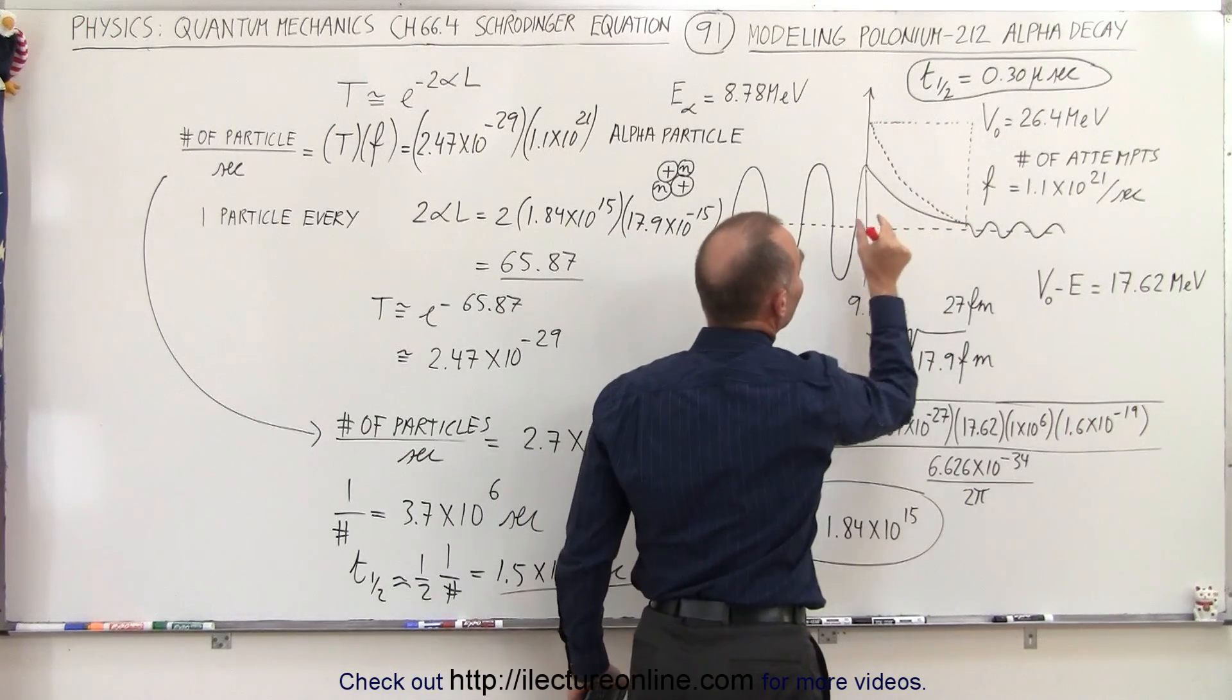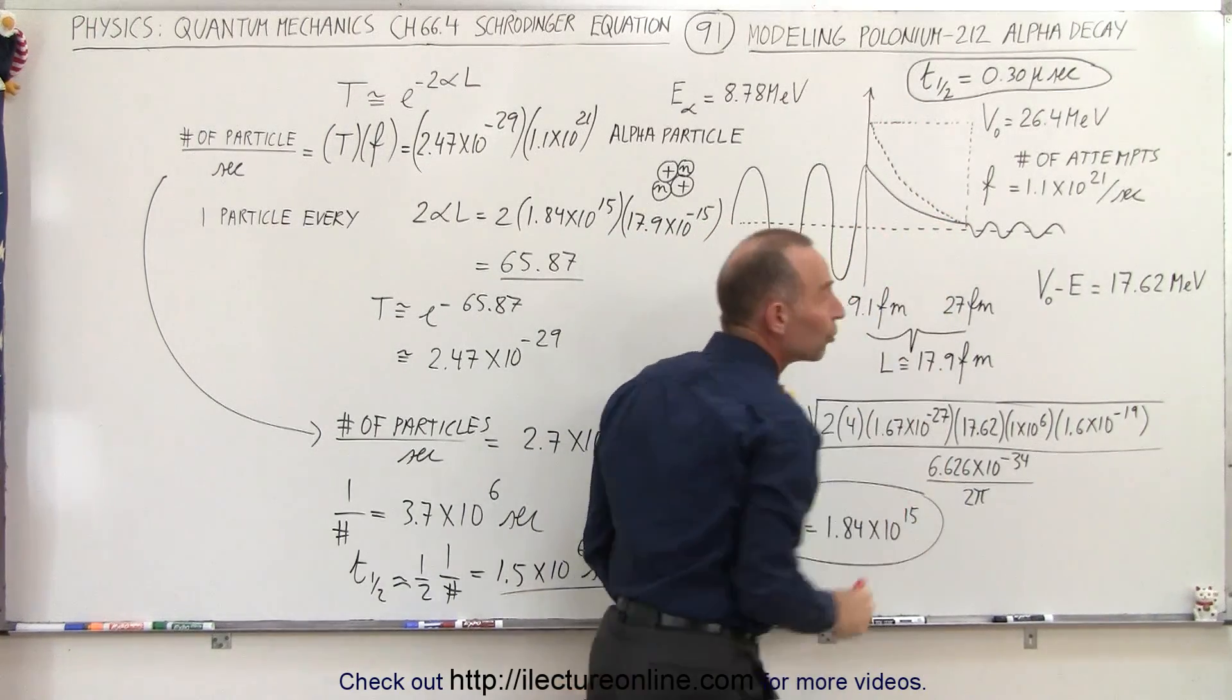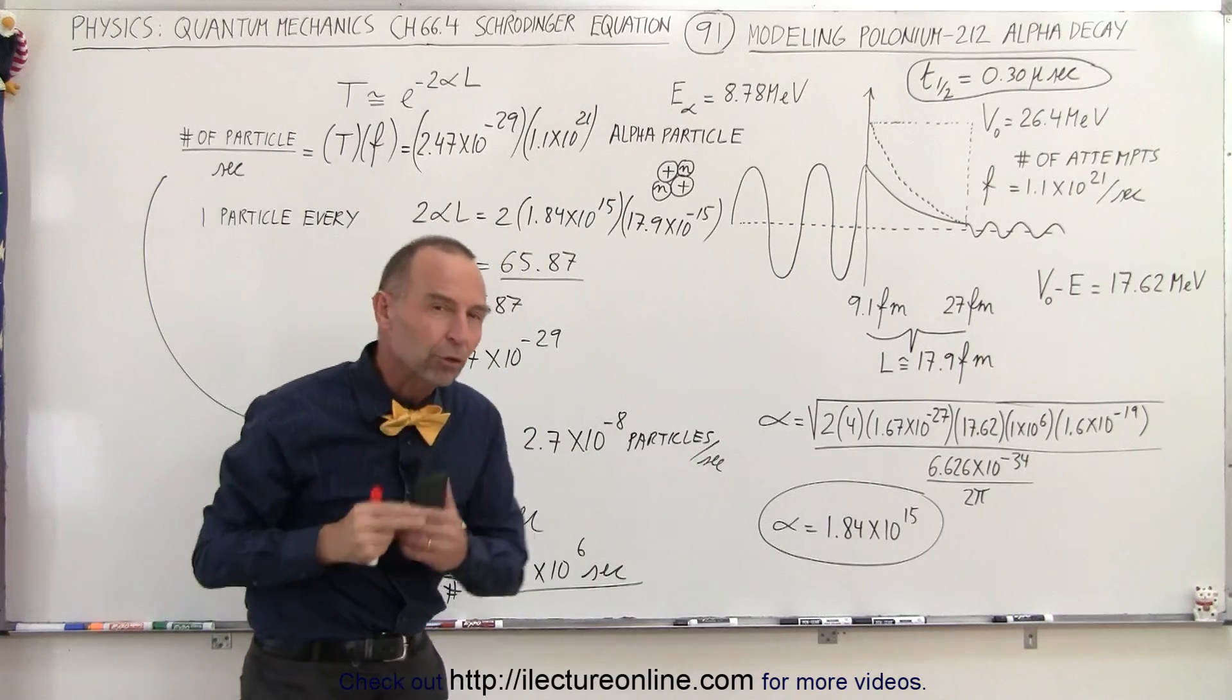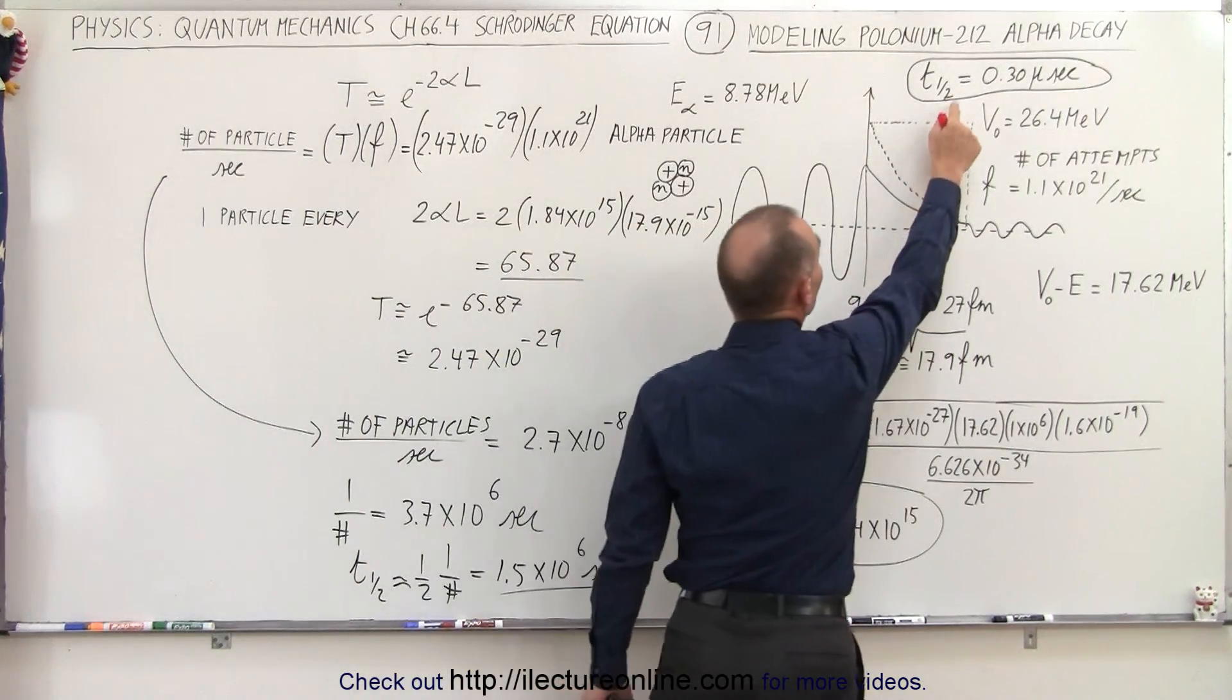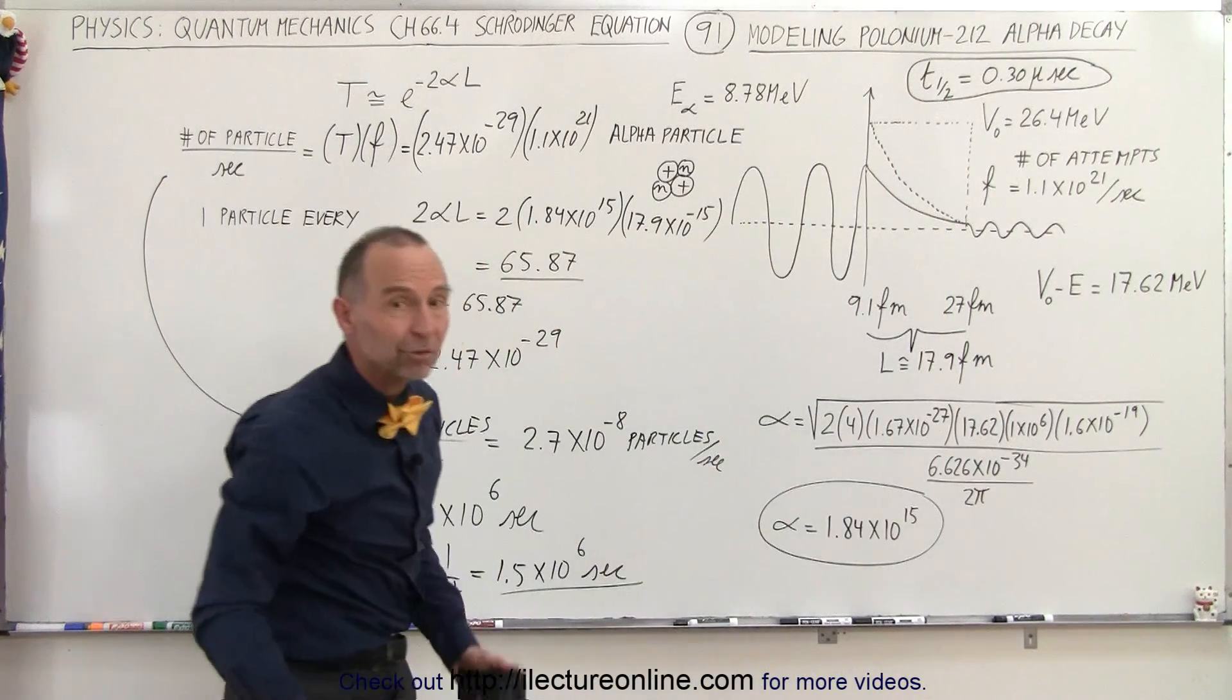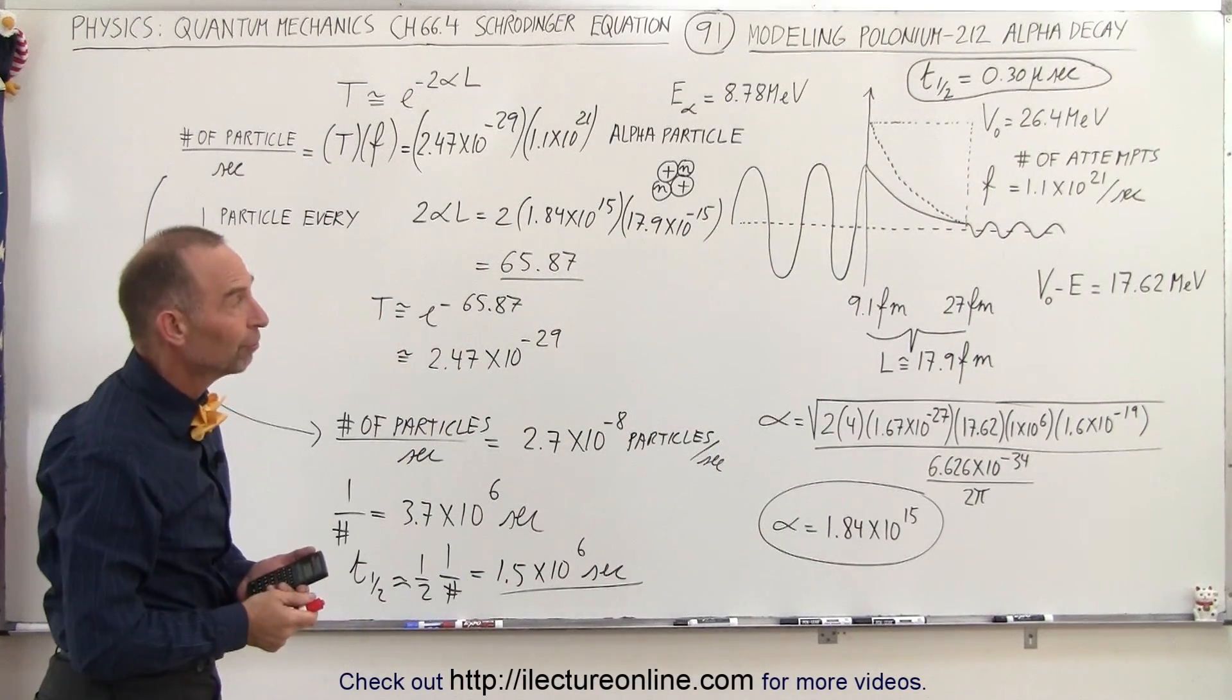And calculate the probability of making it through each section, then multiply all those probabilities together to see if we get much closer to the half-life of the alpha particle trying to escape polonium-212.